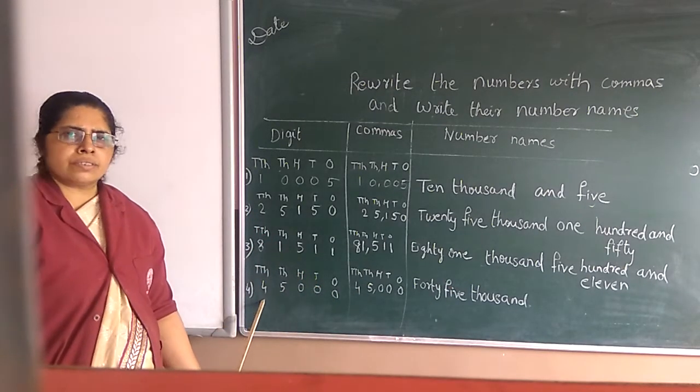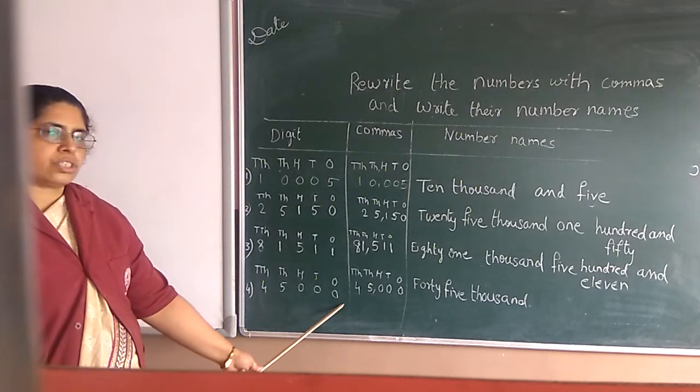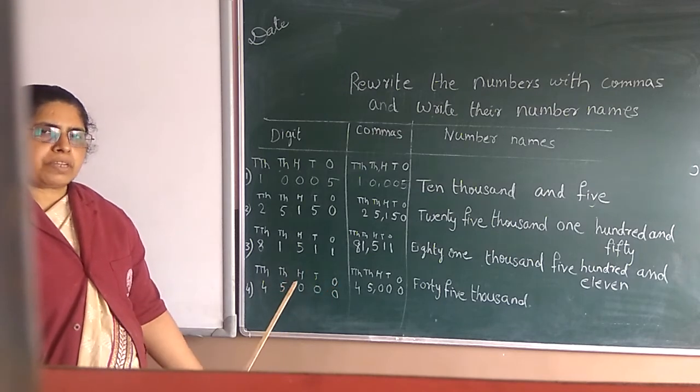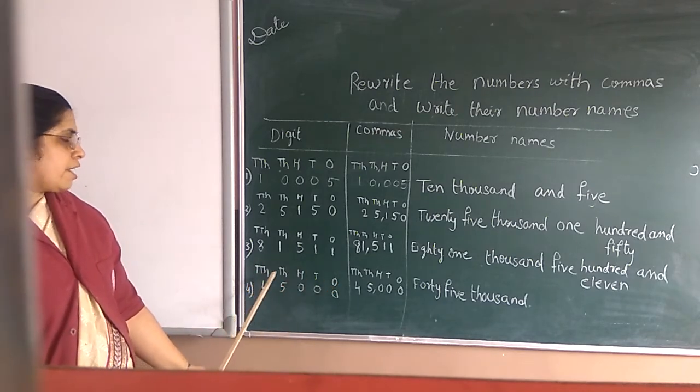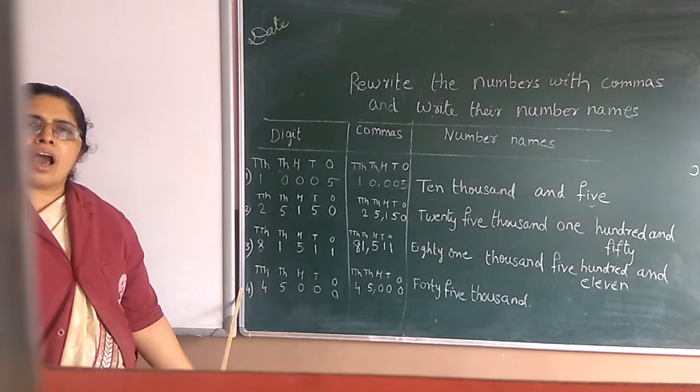Now fourth one. See here only two numbers are there. And ones is 0, and 10s place, 100s place, 1s place is 0. And what? Here 1000s and 10,000s place what? 4, 5. How you will read?